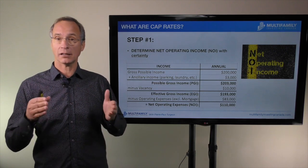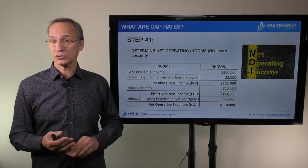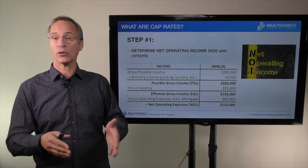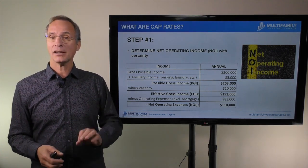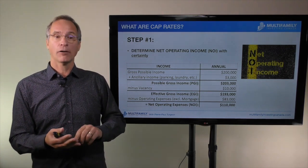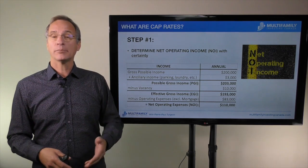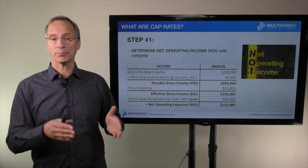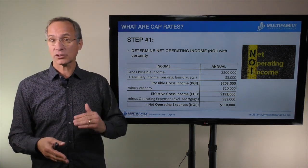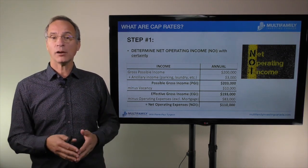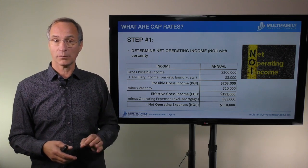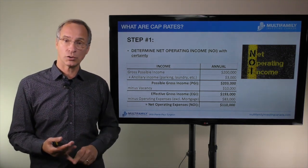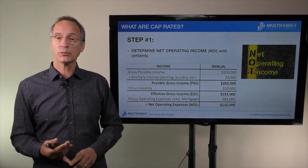The first step in calculating the cap rate is determining the NOI — net operating income — with utmost accuracy. You take all the gross possible income (GPI) plus any ancillary income such as parking and laundry, which gives you the potential gross income (PGI). Then subtract bad debts and vacancies to get the effective gross income (EGI). From the EGI, subtract operating expenses such as property taxes, repairs, maintenance, insurance, property management, advertising, snow removal, and so on. In this example, we end up with an NOI of $110,000.